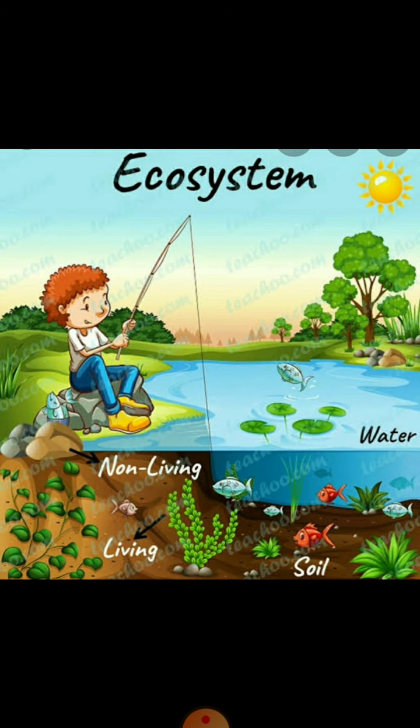Ecosystems may be large or small, which includes oceans, rivers, lakes, ponds, grasslands, deserts and plains.